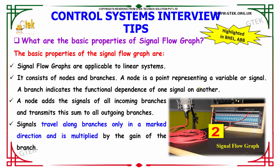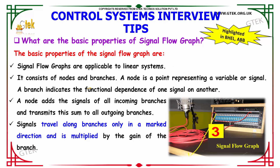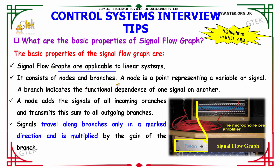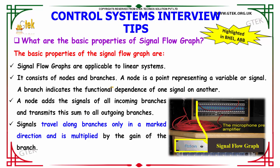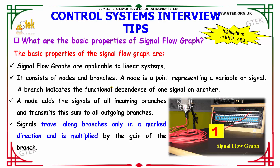What are the basic properties of a signal flow graph? Signal flow graphs are applicable to linear systems. A signal flow graph consists of nodes and branches. A node represents a variable or signal. A branch indicates the functional dependence of one signal on another. A node adds the signals of all incoming branches and transmits the sum to all outgoing branches. Signals travel along branches only in the marked direction and are multiplied by the gain of the branch.